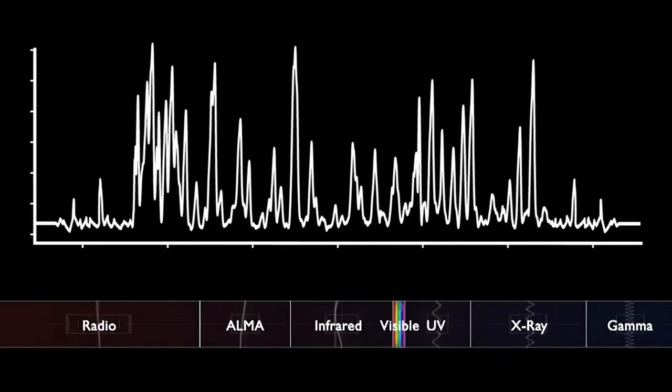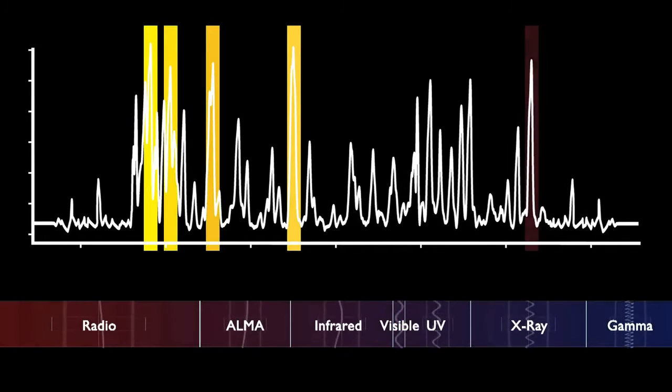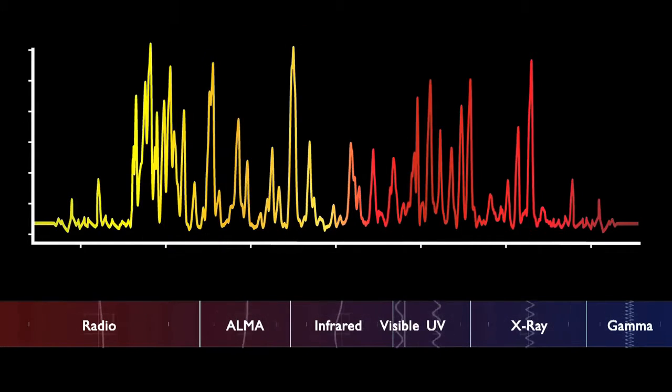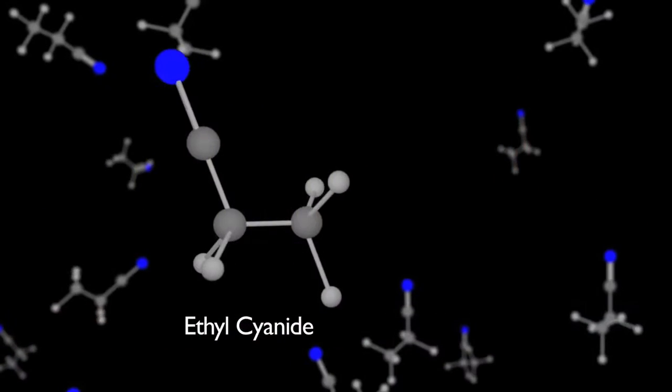Well, in ALMA, we could do better than that. What we could do is we could actually see shades of yellow, we could actually see shades of red, and it's this shading that tells us what the universe is made out of in molecules.